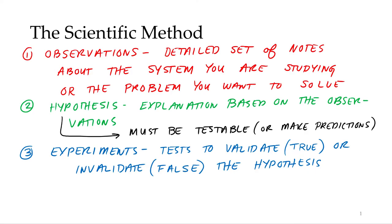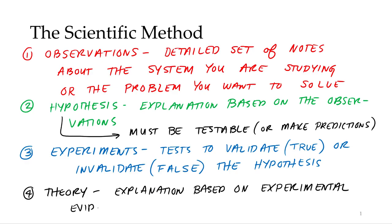And then, if you've got some experimental evidence to back up your hypothesis, we now call that a theory. So theory is an explanation based on experimental evidence or data. Got some data to back it up.